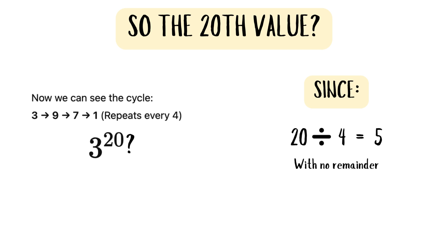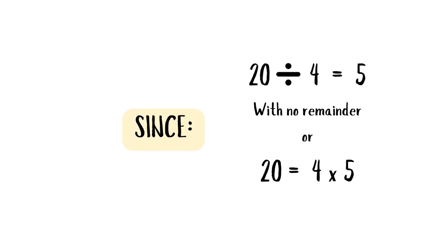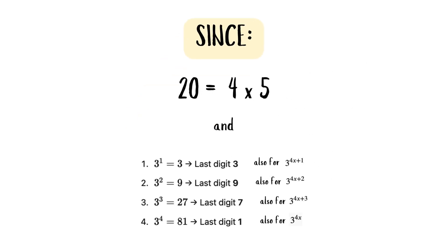Since 20 divided by 4 is equal to 5 with no remainder, this means that 20 is equal to 4 times 5. Now since this pattern is repeating, the last digit being 3 would work for every fourth exponent plus 1.